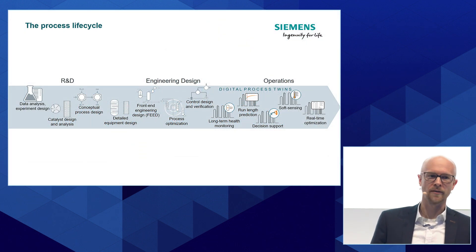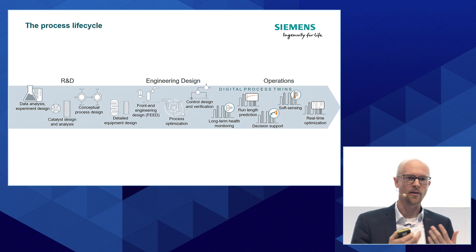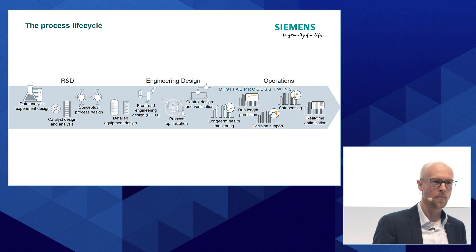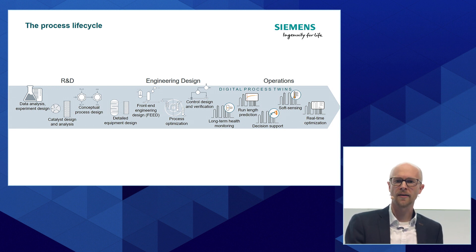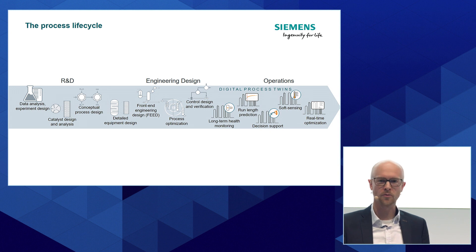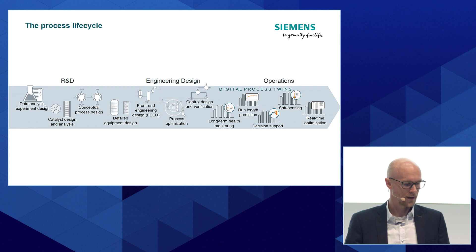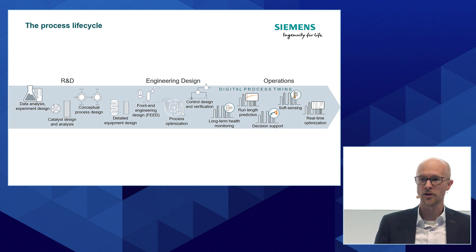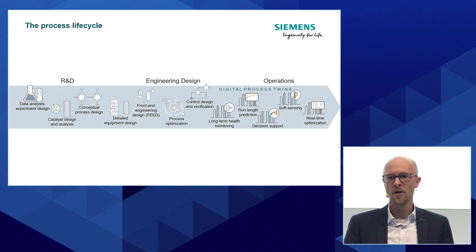How does it look in particular if we look at the lifecycle of a process plant? At the beginning I have to design the process, design and size the equipment, and come up with the best process design possible from the very beginning. Then I want to select the proper control scheme, the control design, and validate it. Then I select my automation system, and then I operate the plant on a day-to-day basis as efficiently as possible. Models and model-based technology can provide a big benefit across the whole lifecycle.